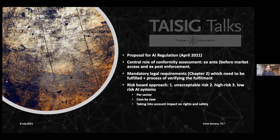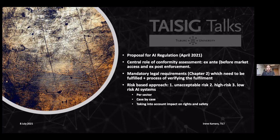Those requirements are mandatory requirements prescribed in the text of the proposal, and they concern a range of things such as transparency and avoiding discriminatory effects from the use of the AI system. A manufacturer or designer of an AI system needs to fulfill these legal requirements and also ensure this is a verified process — that is, subject to conformity assessment. The AI regulation proposal adopts a risk-based approach, which is an important notion connected to conformity assessment.